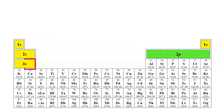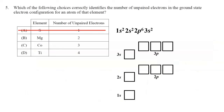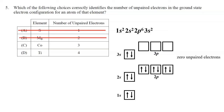Moving to choice B, magnesium: its configuration is 1s2, 2s2, 2p6, 3s2. When we fill in those 12 electrons for magnesium in the orbital diagram, there are zero unpaired electrons. Choice B says two unpaired electrons, so it's eliminated too.